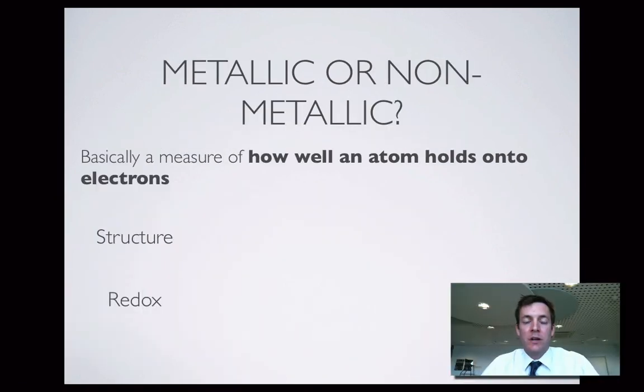And finally, looking at whether things are metallic or non-metallic, so this is trends in metallicness, I suppose you could say. This basically boils down to how well an atom holds on to electrons. And as you saw when we were talking about atomic radius and, well, not so much atomic radius, but electronegativity and ionization energies, that's what this was all about.